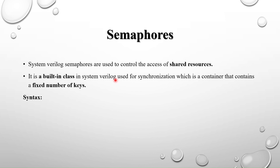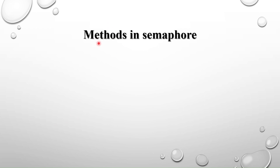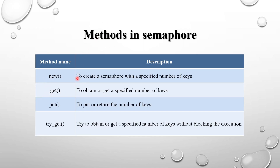The syntax is: semaphore followed by the handle name — for example, `semaphore sem_handle`. Here, semaphore is the keyword (class name) and sem_handle is the class handle. In semaphores, we have four methods: new, get, put, and try_get.